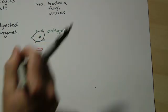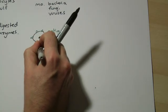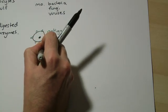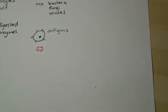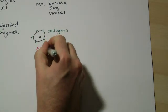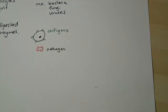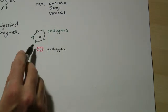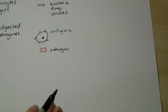Now, anything that comes in that shouldn't be there, any pathogens, will also have these markers or antigens on their surface. So this is our pathogen, it's got in, and we can see it's got different antigens to your own body.